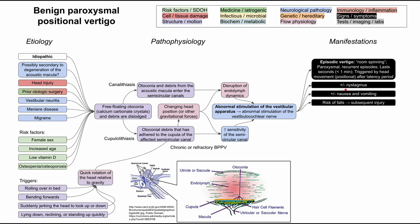In addition to vertigo, patients may have nystagmus on physical exam, and nausea and vomiting are also possible, though not all that common in BPPV. Usually vertigo with significant nausea and vomiting is due to other causes of peripheral vertigo like vestibular neuritis and Meniere's disease, which are longer lasting. BPPV typically lasts only seconds — less than one minute — which may be too short to cause nausea and vomiting, though it is still possible. Any type of vertigo puts patients at risk of falls and subsequent injuries.